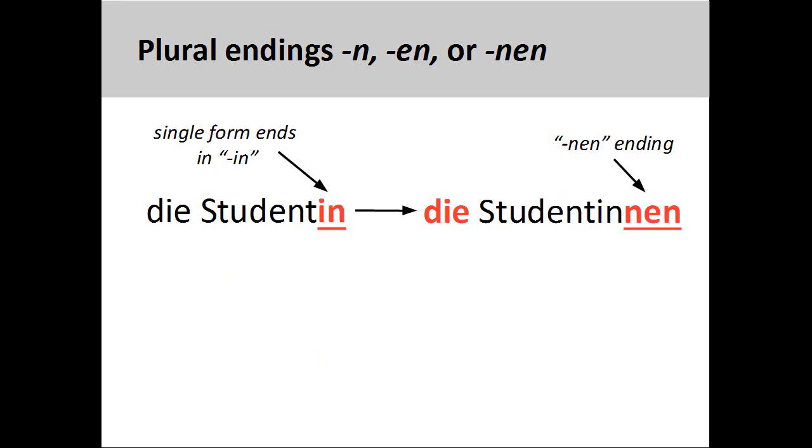All feminine nouns ending in -in, such as Studentin, a woman student, will have the plural ending -nen: Studentinnen.